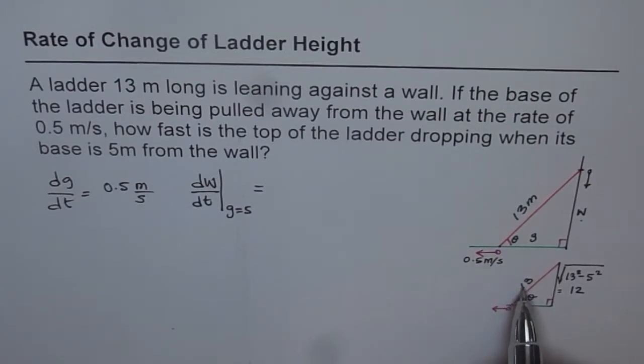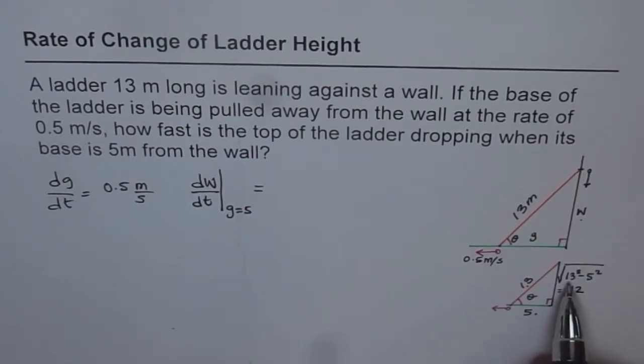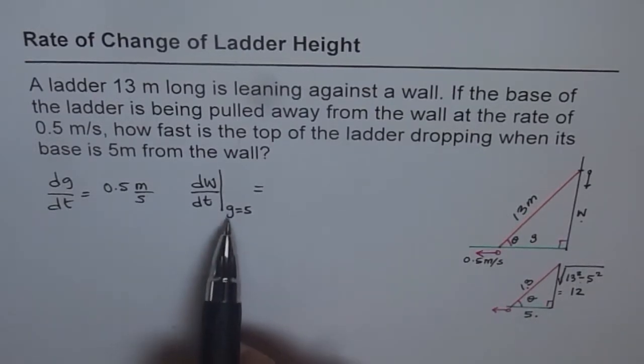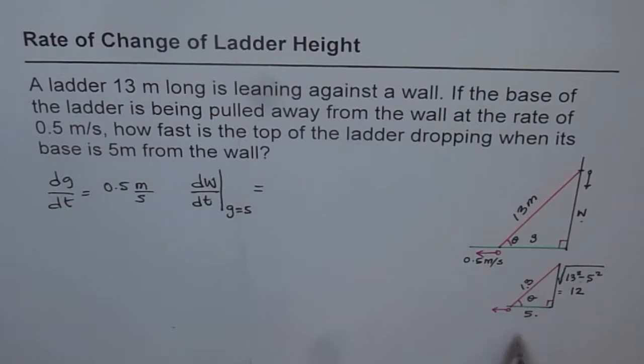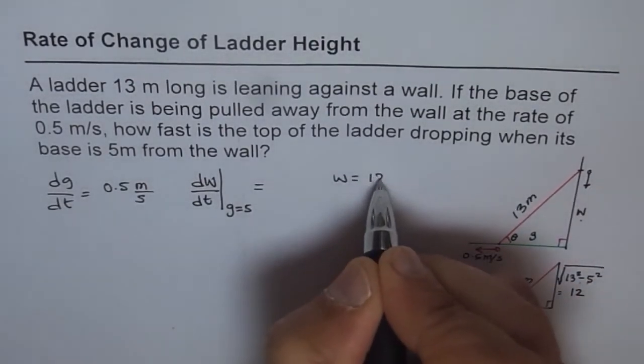At that instance, the ladder is 13, this base is 5. Height is going to be square root of 13 squared minus 5 squared. 13 squared is 169, 169 minus 25 is 144, and square root of 144 is 12. So we get 12 as the height at that particular instance. We know when G equals 5, at that time W, this height, is going to be 12.